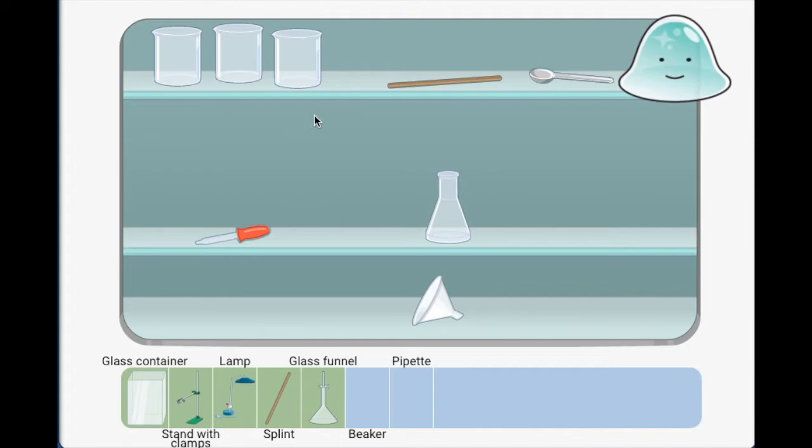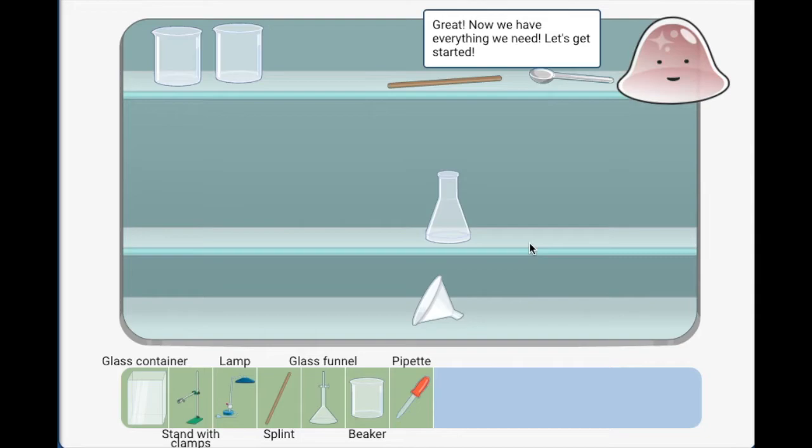After splint, we have a beaker. Beaker is here. After that, we have a pipette. This is a pipette. Information is complete. We will take this pipette. Great. Now we have everything we need. Let's get started.